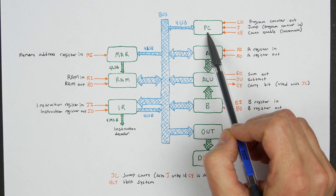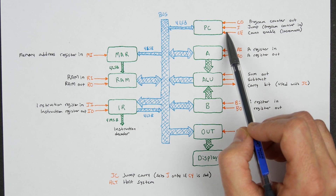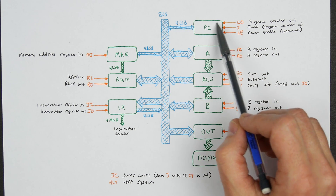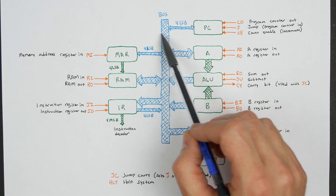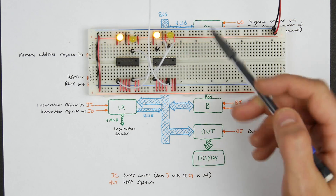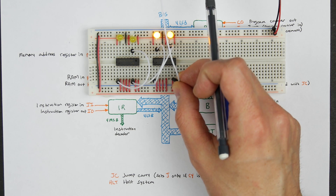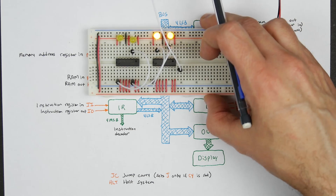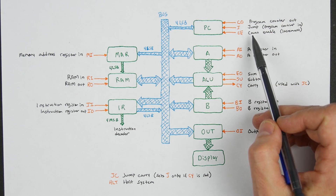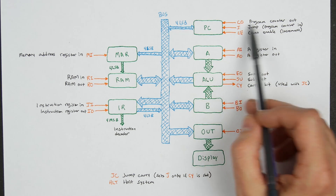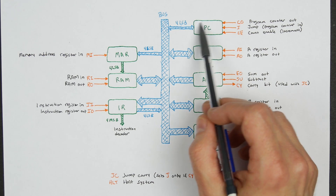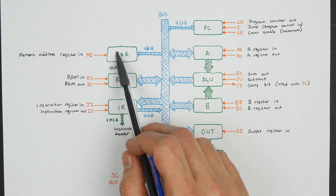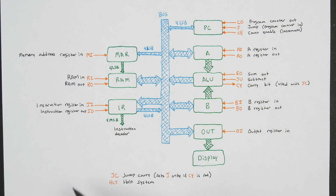The program counter has a few control signals. One is the program counter out signal, which works just like the A register out or B register out — it tells the program counter to put whatever value it's storing onto the bus. When we stop the counting, the counter is storing a value; for example, 0011 is 3 in binary. Whenever we enable that signal, the contents of the program counter will be asserted out onto the bus, and then some other part of the computer — for example, the memory address register — can latch in that address.